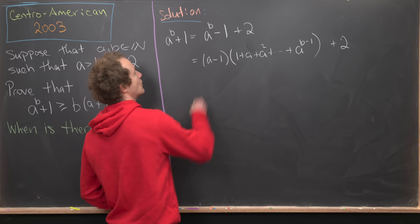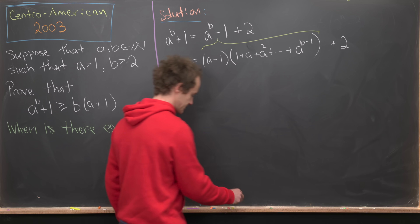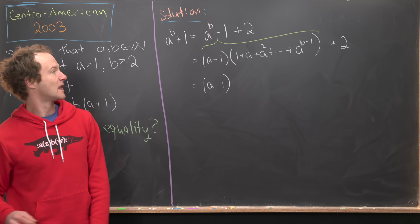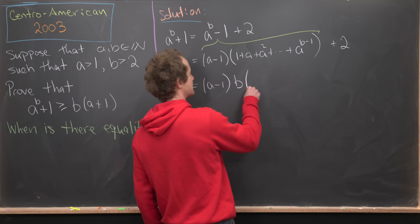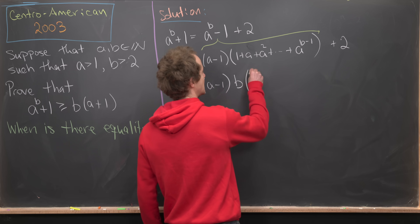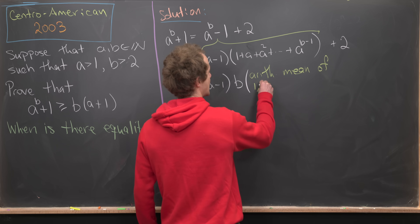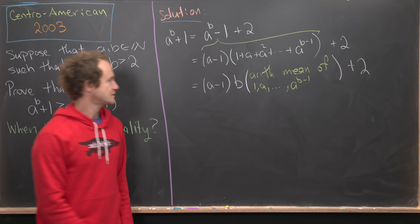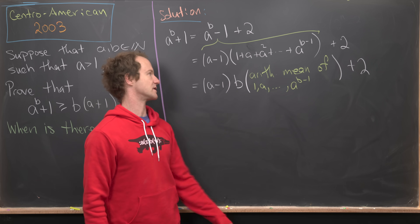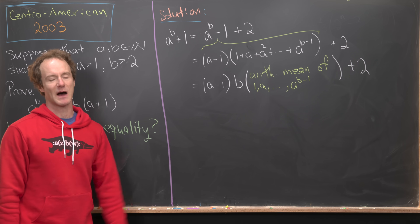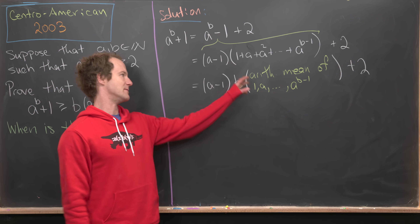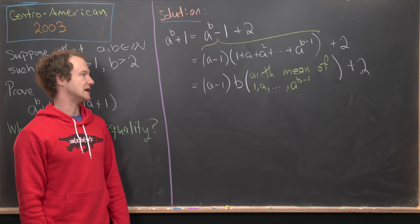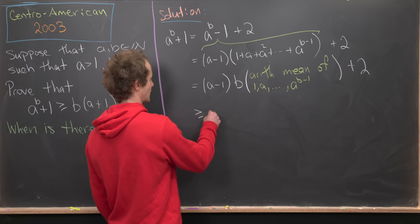We've factored that expression. Next we can see that this is equal to A minus one times B times the arithmetic mean of the numbers 1, A, all the way up to A to the B minus one, plus two. Notice that the arithmetic mean of these numbers equals their sum divided by B, and if we divide by B and multiply by B we haven't changed anything. Next we use the arithmetic-geometric mean inequality.